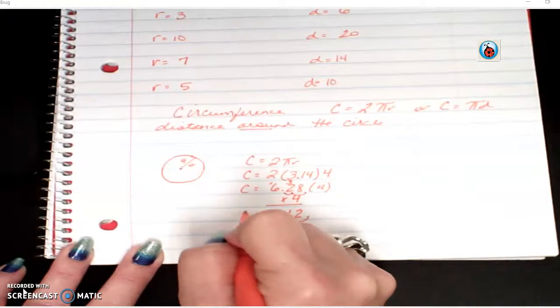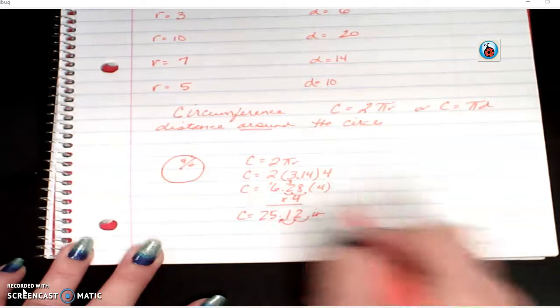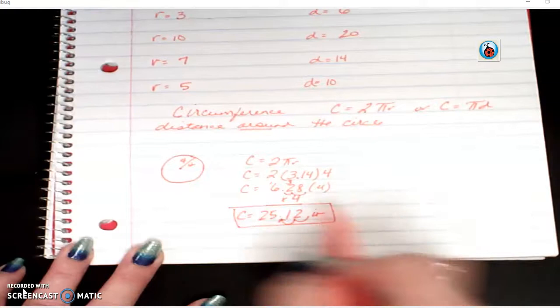So my answer is 25 and 12 hundredths, and that's going to be inches. It's not squared. It's not area. It's like perimeter. I only added inches plus inches. I didn't ever multiply them together.